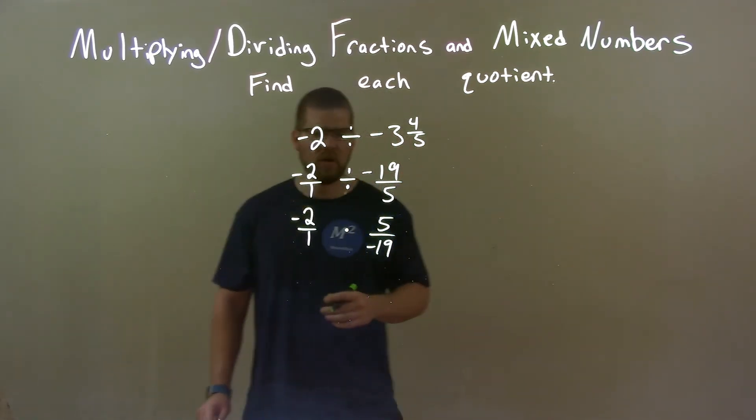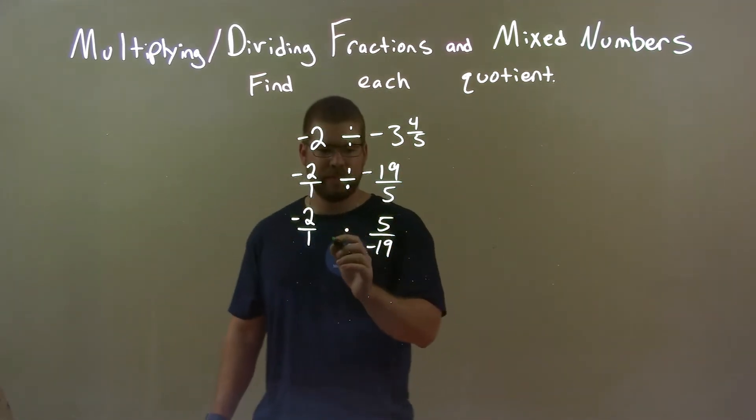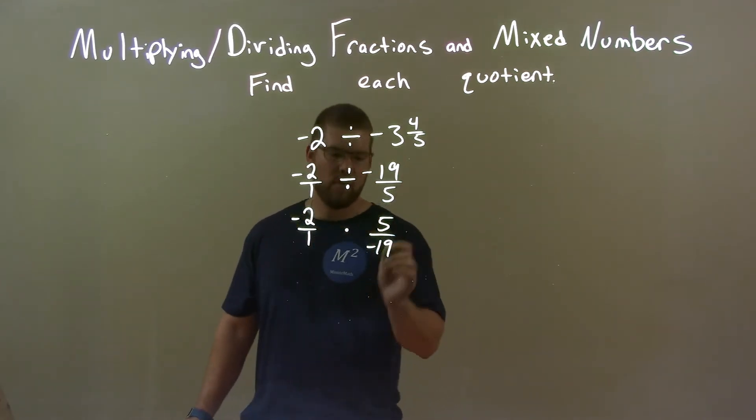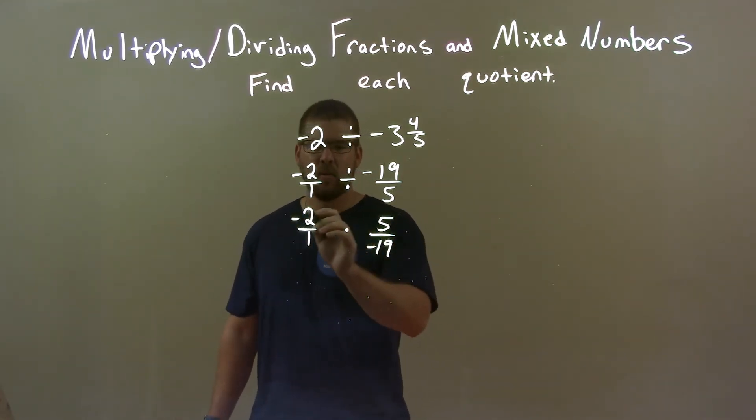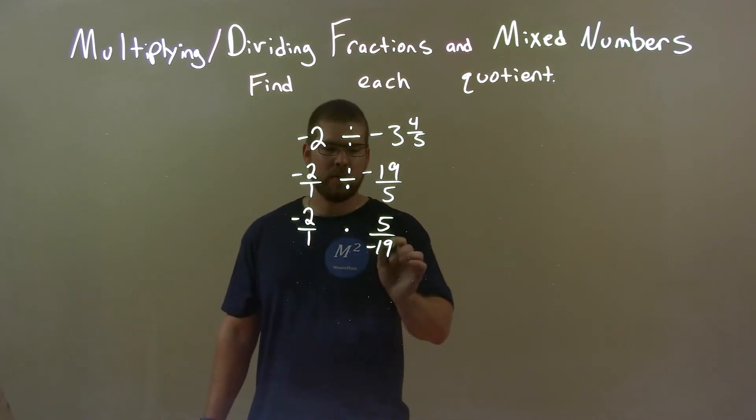So now we have negative 2 over 1 times 5 over negative 19. Well, multiply across the numerator, multiply across the denominator.